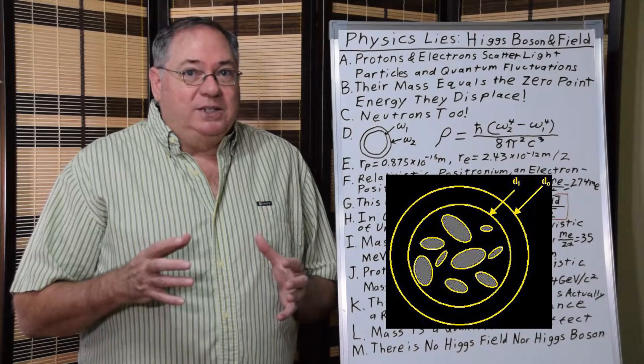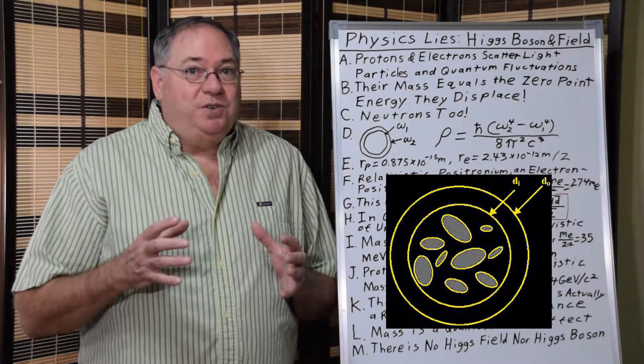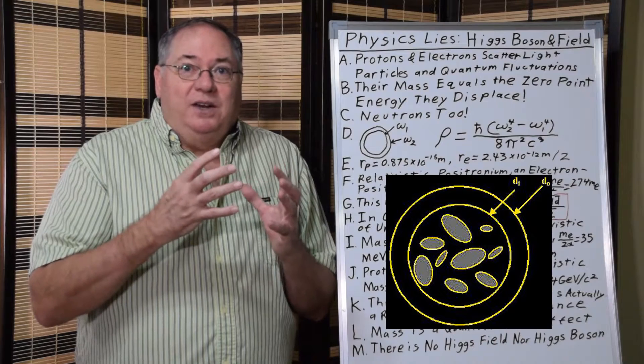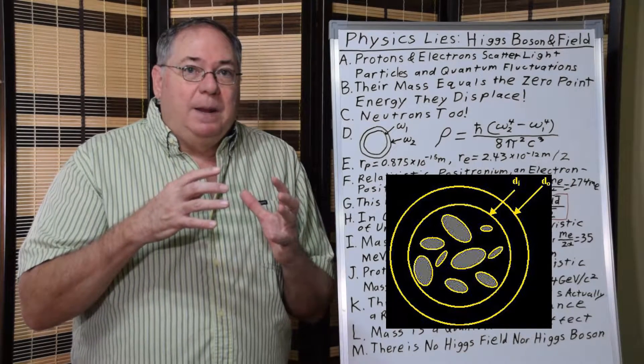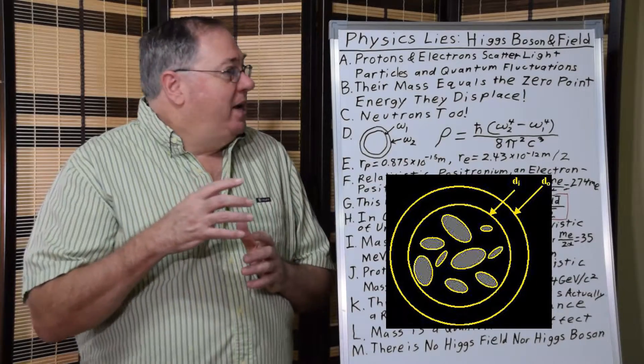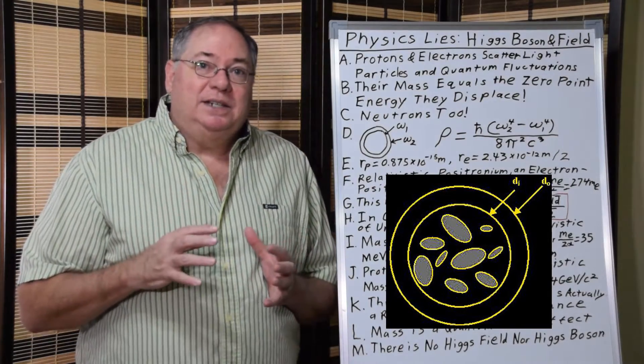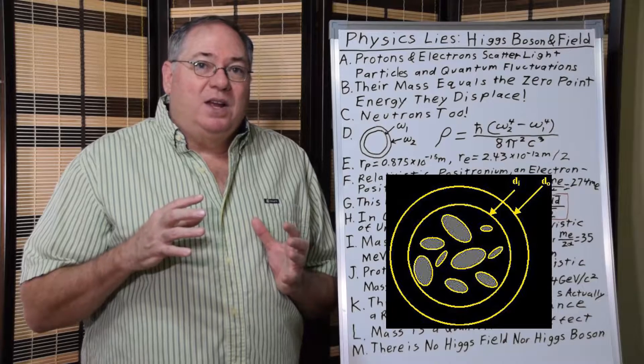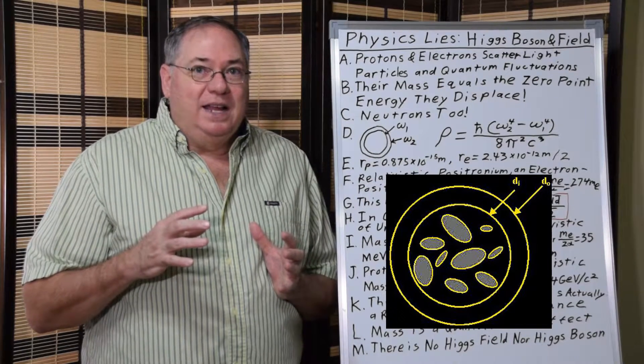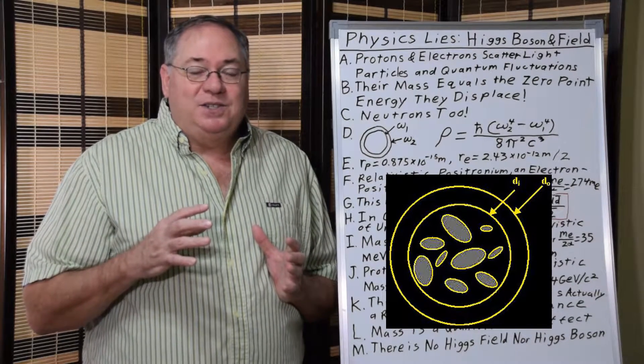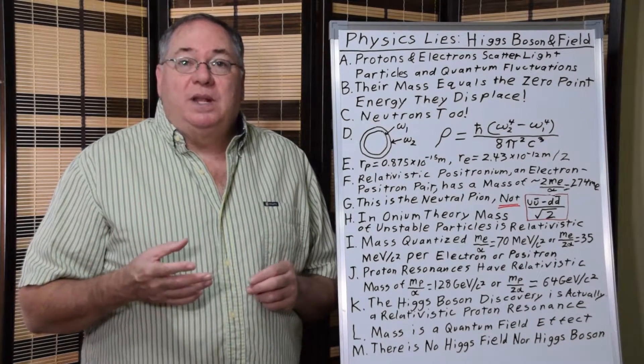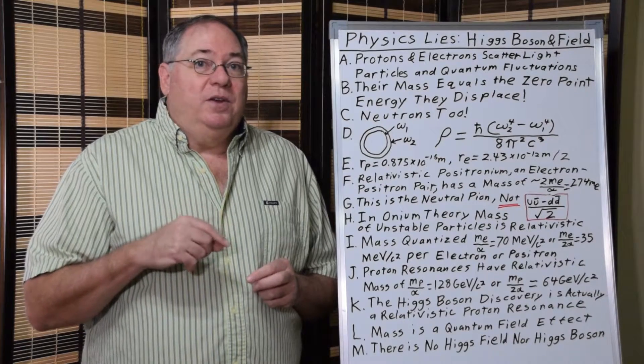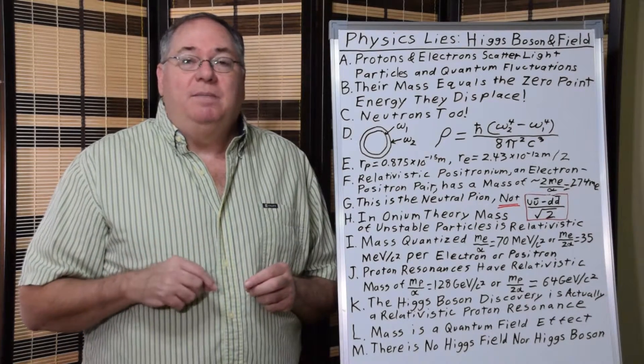So whenever you have a proton which scatters at its charge radius, it's like a spherical shell that's scattering quantum fluctuations. And if you actually bother to do the calculation, the amount of quantum energy that a proton displaces at its charge radius is equal to its mass. And the same thing is true with an electron if you use a radius that's half the quantum wavelength.